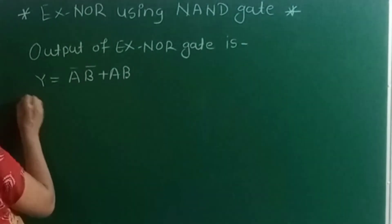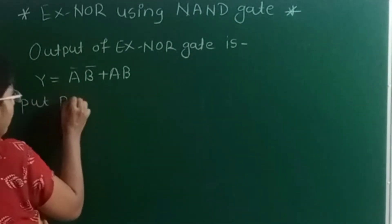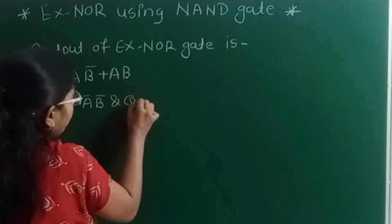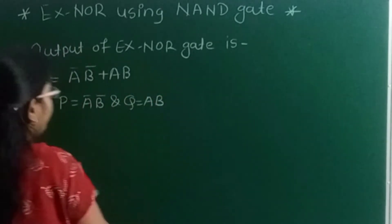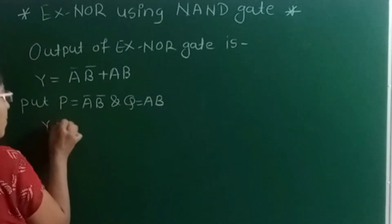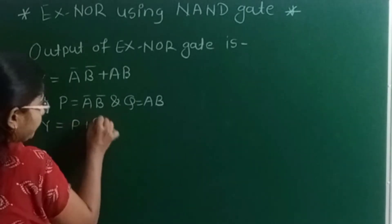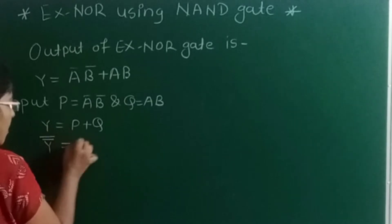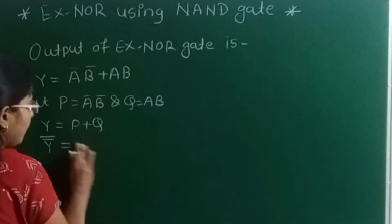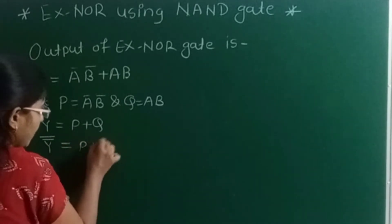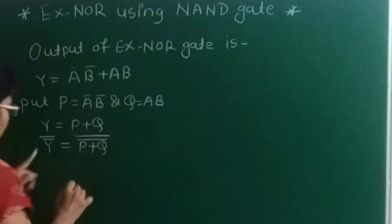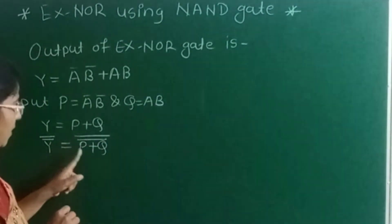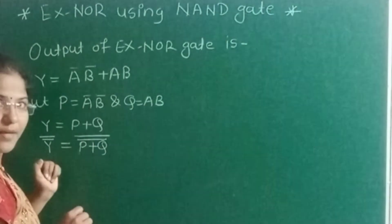First, I will put P = A'B' and Q = AB. So this expression becomes Y = P + Q. Now by using the inversion law, I will take the double complement of this expression and write Y double complement equal to (P + Q) double complement.